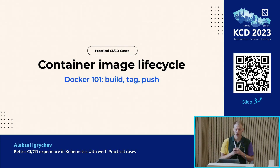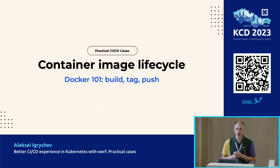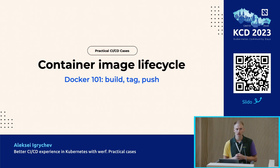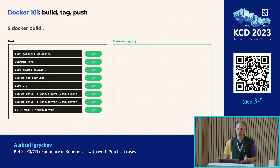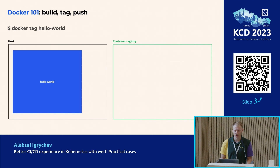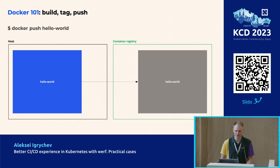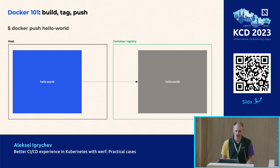Let's look at one more scenario with Docker: image publication. In Docker, we have three options to do that — build, push, and tag. So: build, tag, and push. The image is published to the container registry. Now we have enough context to see how the same is done with Werf.